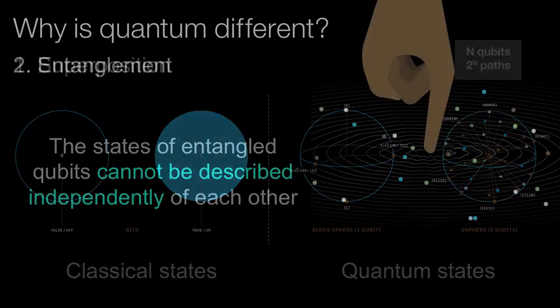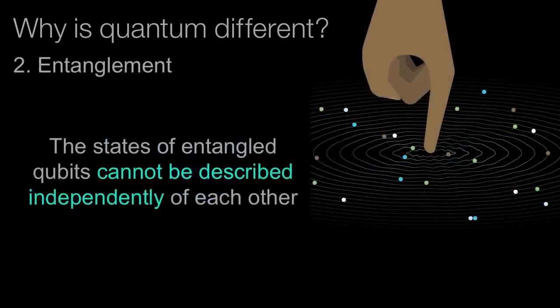The second quantum effect is entanglement. I've got two qubits and I'm entangling them together, so measuring the first qubit can tell me something about what will happen when I measure the second qubit. Entanglement is the second property that gives quantum information a really unique difference.